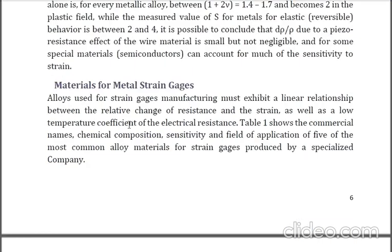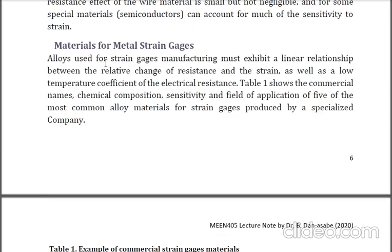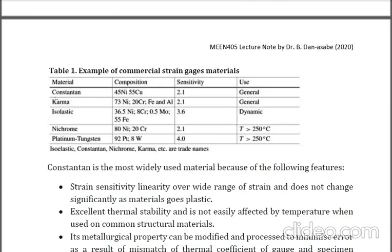Here we look at materials for strain gauges. Some of the materials used are Constantan, Karma, Isoelastic, Nichrome, Platinum, and Tungsten. Constantan is 45% nickel and 55% copper. It has a sensitivity of 2.1 and is for general use. Karma and Constantan can be used for general use, while Isoelastic can be used for dynamic use.